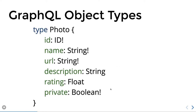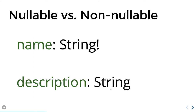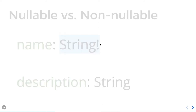Similarly, a Photo type can have properties like id, name, url, description, rating, and private. Photo is an object type, and object types can have nullable or non-nullable properties. Non-nullable means, for example, when you put an exclamation mark after String, the name property must be present. Description, on the other hand, is a nullable property.